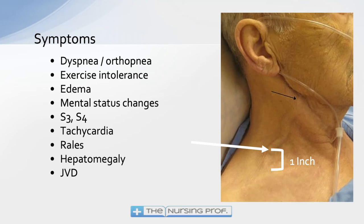An S3 and an S4 are important findings. An S3 is an indication of heart failure — but I'm talking about when these are new. If a patient had an S3 historically there could be other causes like valvular disease. But if the patient did not have an S3 or S4 and now you're hearing one, that can indicate something happening acutely. In an acute situation, an S3 indicates heart failure; in an acute situation, an S4 indicates myocardial infarction.